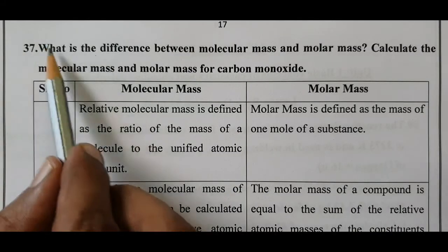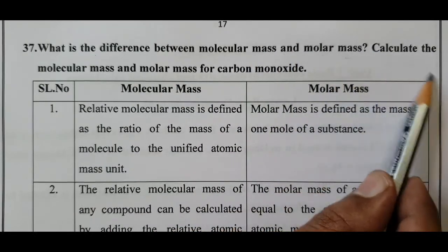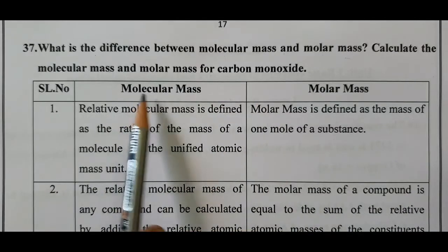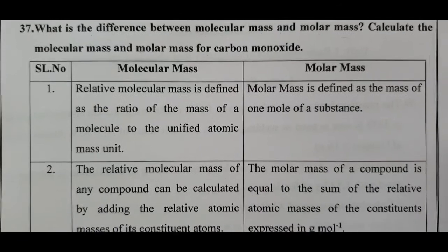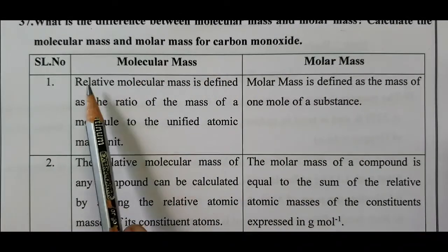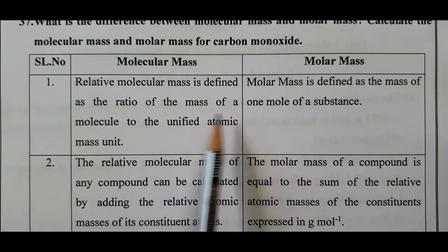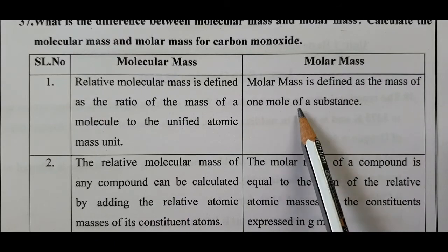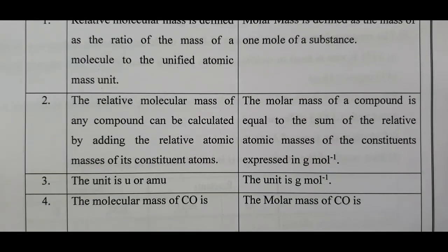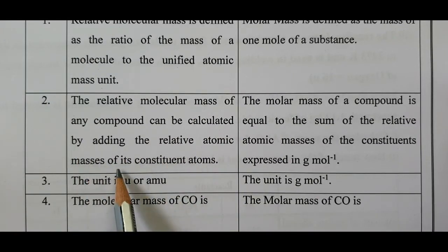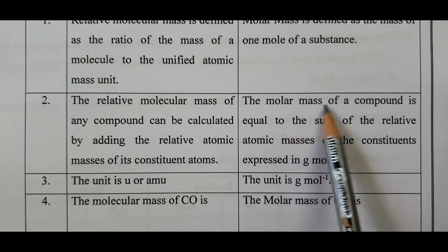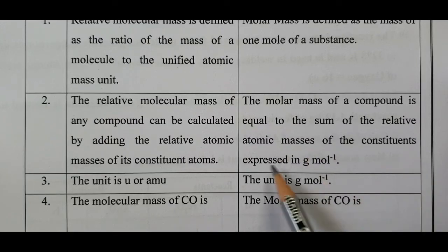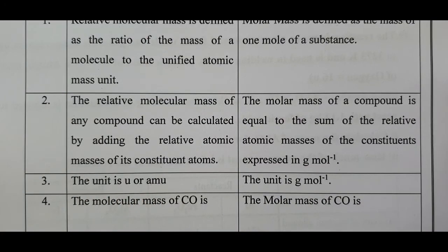Question number 37: What is the difference between molecular mass and molar mass? Relative molecular mass is defined as the ratio of the mass of a molecule to the unified atomic mass unit. Molar mass is defined as the mass of one mole of a substance. The relative molar mass of any compound is calculated by adding the relative atomic masses of its constitutive atoms, expressed in gram per mole. The unit of molecular mass is U or AMU; the unit of molar mass is gram mole power minus 1.